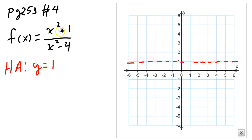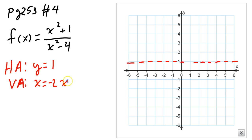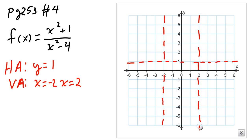The numerator doesn't factor, so I know that nothing will cancel out of the top and bottom — there are no holes. But let's take a look at vertical asymptotes. Vertical asymptotes are values that make my denominator 0 that aren't holes, and so that would be x equals negative 2 and x equals positive 2. I'll graph those now — vertical lines here and here.